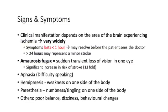If the symptoms are still persisting after 24 hours, the patient may in fact be experiencing a minor stroke. Other signs and symptoms that patients can present with include aphasia, hemiparesis or weakness on one side of the body, paresthesia, numbness or tingling on one side of the body, poor balance, dizziness, and behavioral changes. An interesting presentation worth knowing is amaurosis fugax — a sudden transient loss of vision in one eye — which significantly increases the risk of stroke up to 13-fold.